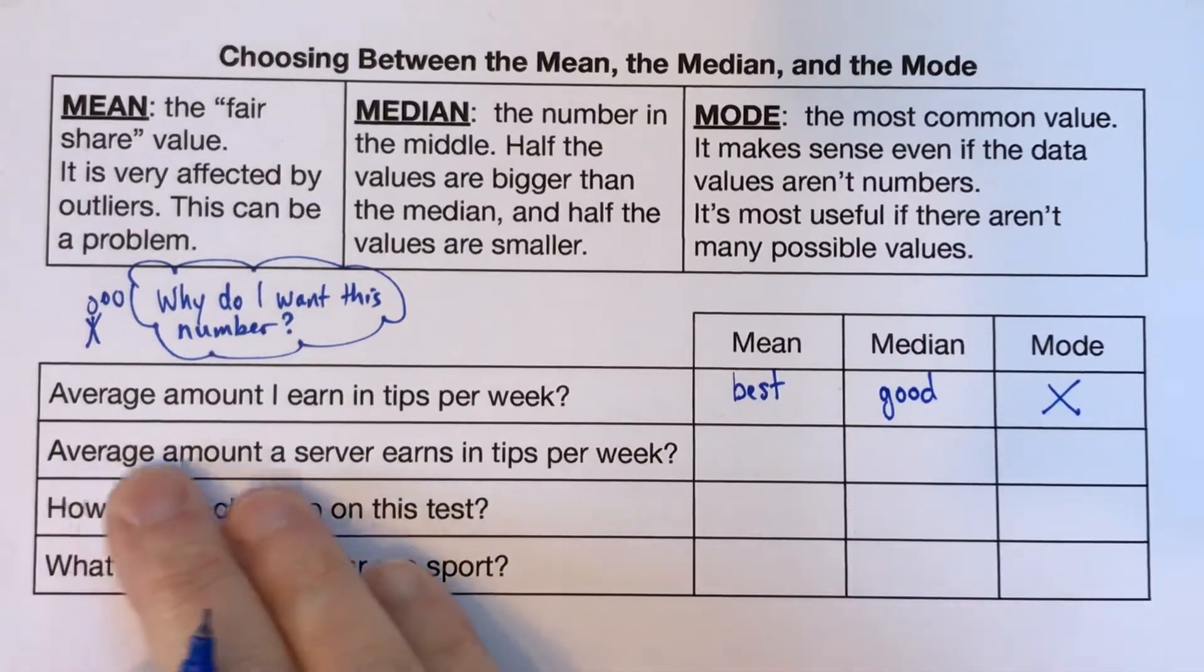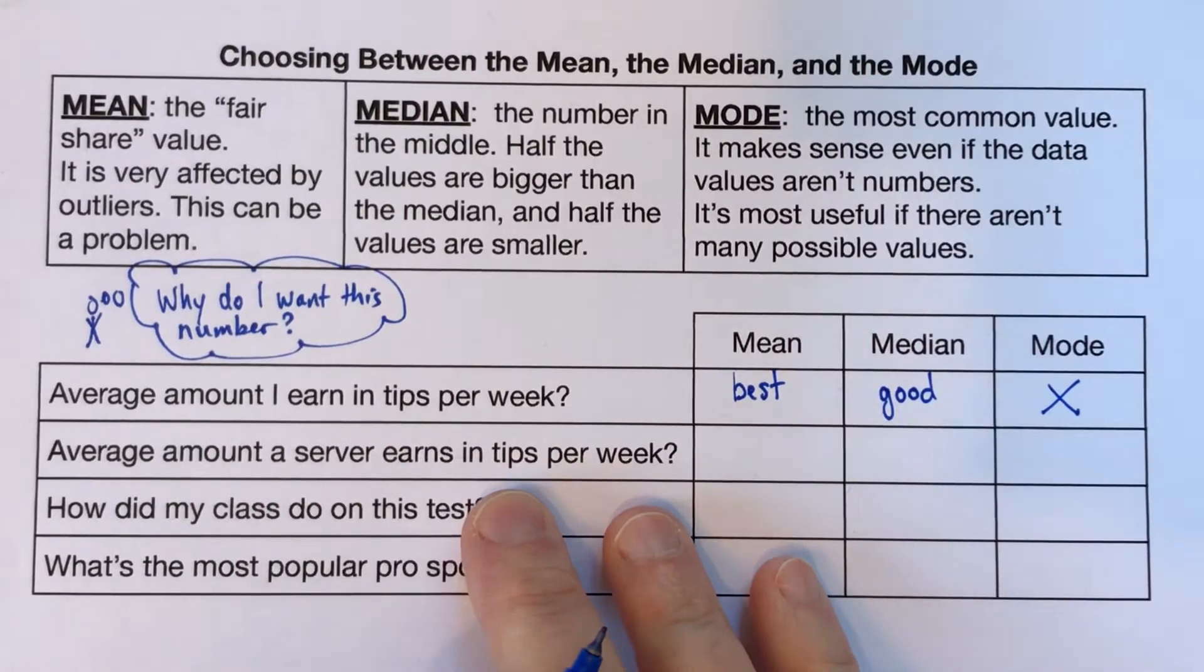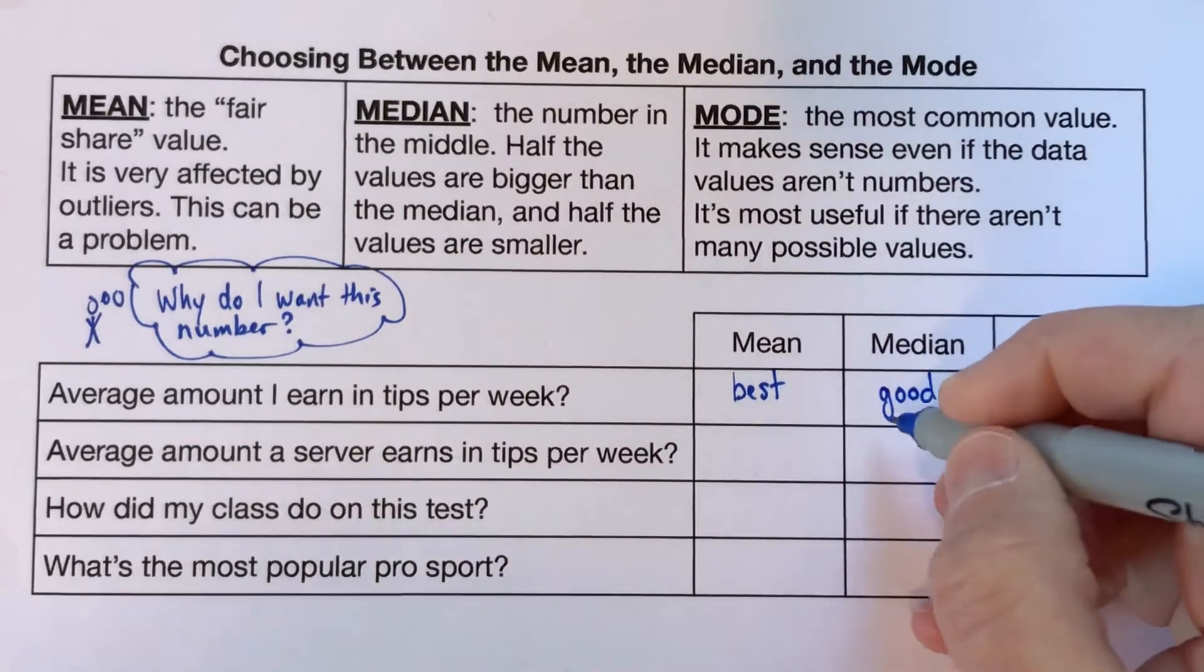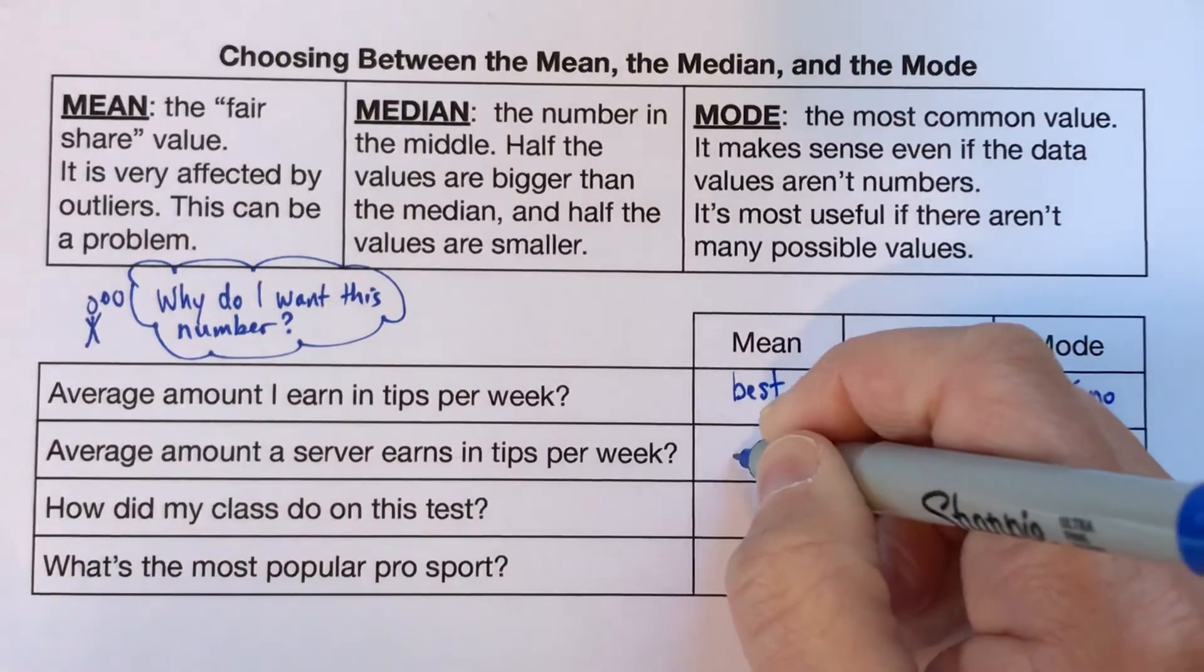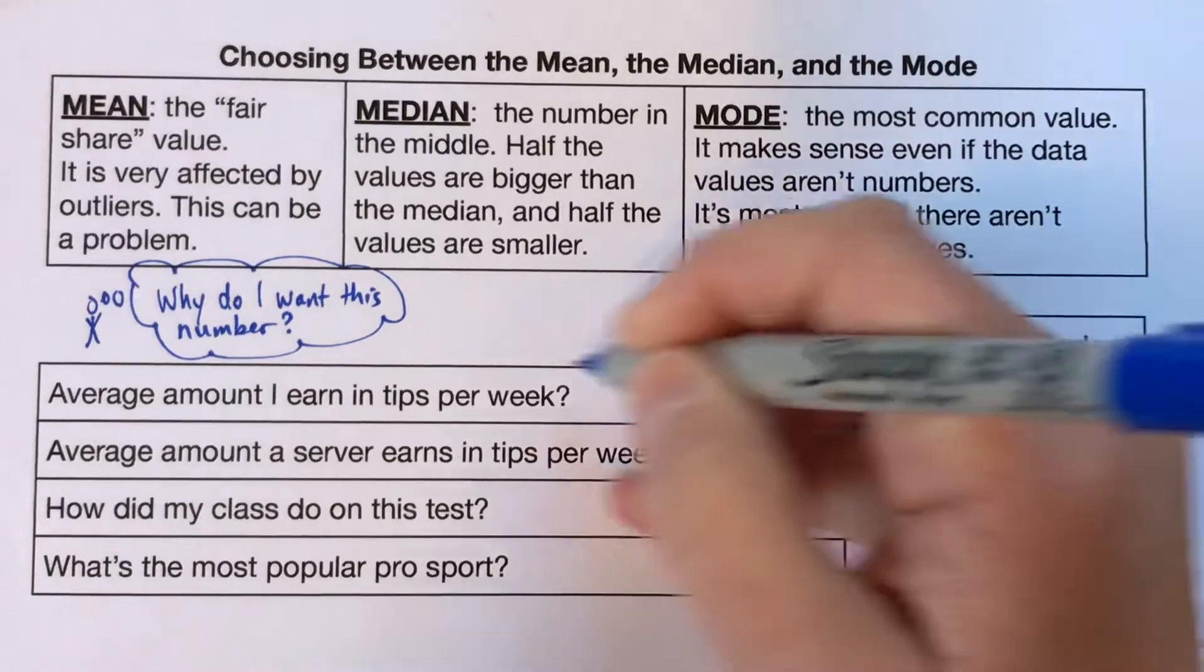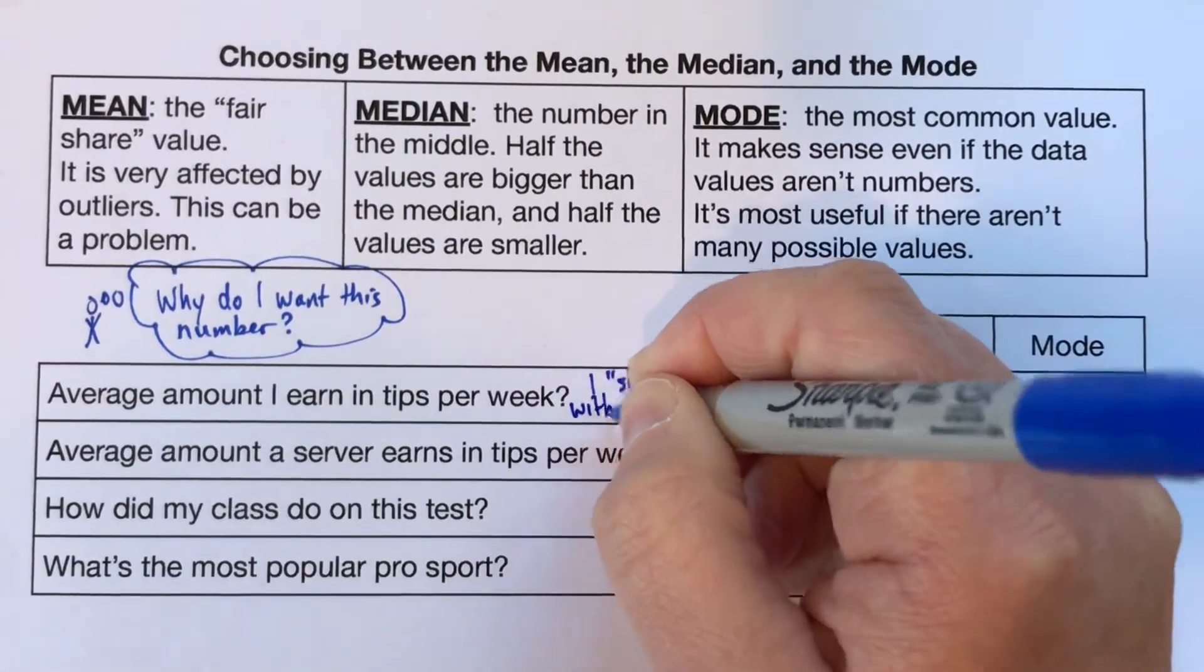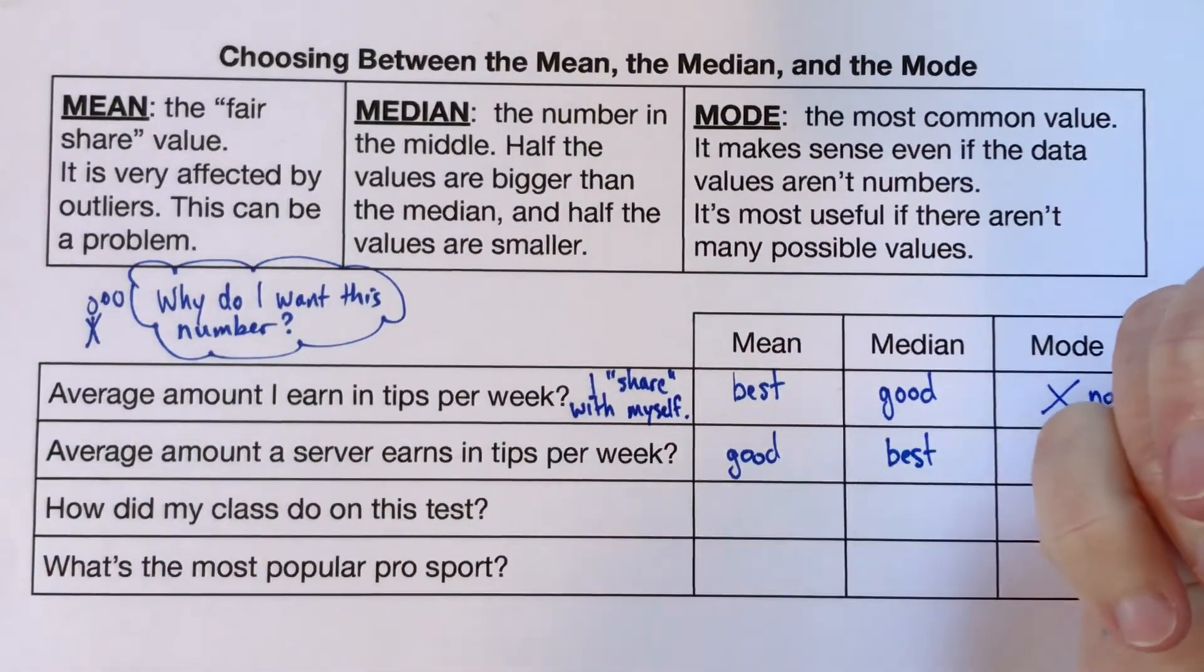Now this one's really similar. The average amount a server, let's say a server in the same restaurant, earns in tips per week. And I'm actually going to give a different answer. I'm going to say the mode is not very good for the same reason. But here I'm going to say that the median is best, and the mean is okay. And here, it has to do with sharing. So I will say, I share with myself, because I save up my money from one week and spend it a different week.